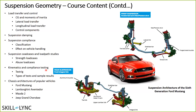KNC testing: whatever we've learned about geometric and elastic properties can be quantified using a KNC test rig. We'll look at how testing is done, some real-world test results, and the types of tests they do. At the end of this section, we'll look at chassis architectures of some popular vehicles — sports cars, economy cars, and off-road vehicles — so you can appreciate the difference in suspension architecture between a sports car and an off-road vehicle, and identify what each link does and what happens if you change the geometry.